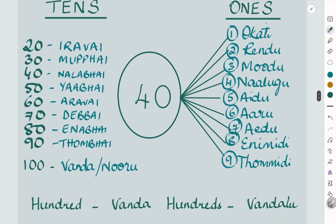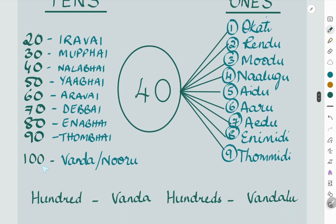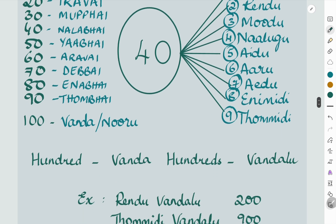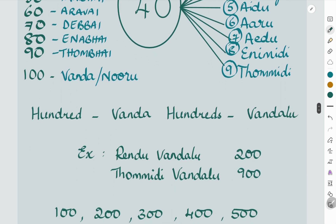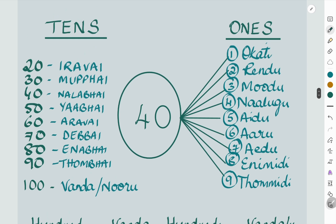Once you have learnt up to 'tumbhai tummidi', the next one is a hundred, which is 'vanda' or 'nooru'. Just as in English, a hundred is called 'vanda', but for hundreds there is another word: 'vandalu'. So 1 hundred is 'okavanda', 2 hundreds is 'rendu vandalu', and so on up to 9 hundreds — 'tummidi vandalu'.